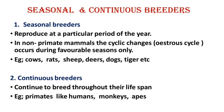Seasonal breeders reproduce at a particular period of the year. In non-primate mammals, the cyclic changes — that is, the estrus cycle — occur during favorable seasons only. So seasonal breeders are animals that have the estrus cycle.